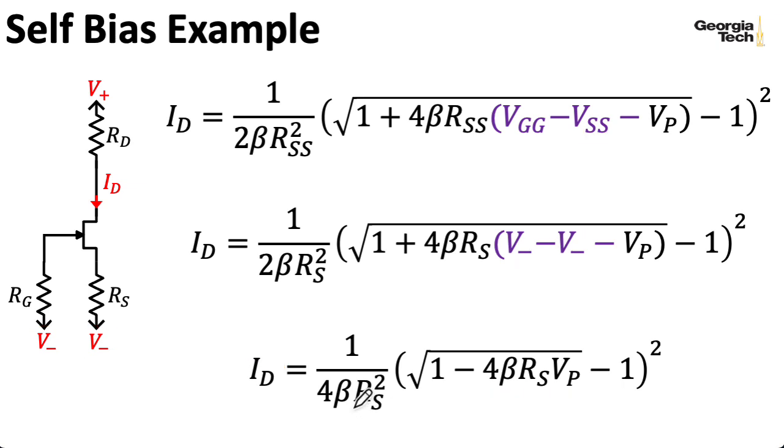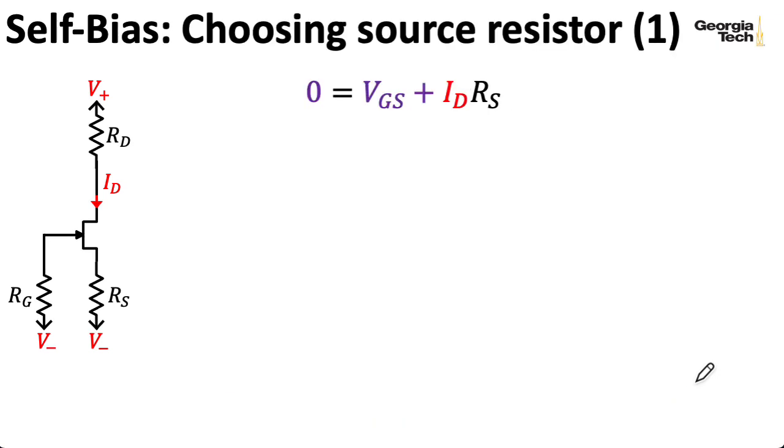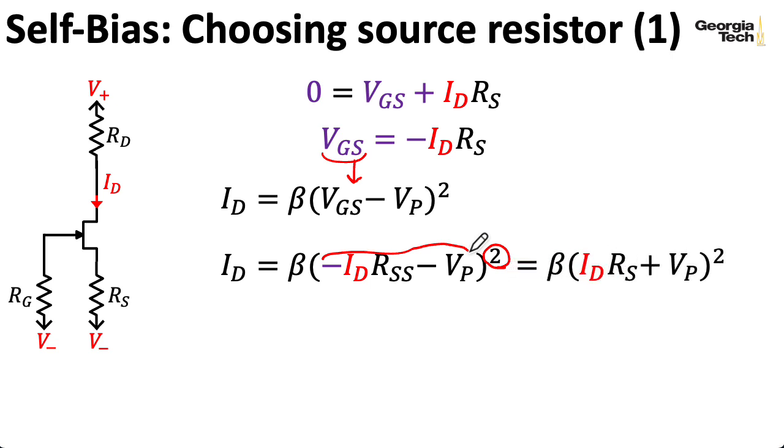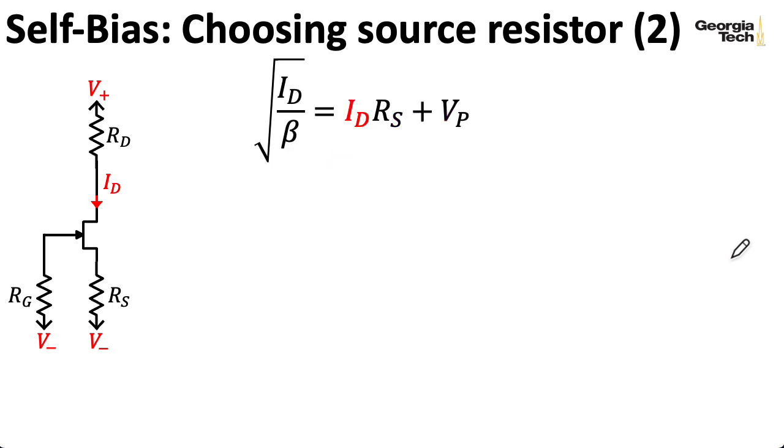Now we can go the other direction and try to find the appropriate RS that will give us a specific ID. You can do that by manipulating this equation, but it's actually easier to go back to some of the earlier equations. So manipulating this expression, we can write something like this. And then I can take the expression we had for the drain current in terms of the square law. Remember, I'm approximating the channel length modulation parameter lambda as 0. And now I can take VGS and substitute it in here to write this expression. But notice I have a square here. So I can take everything inside the parentheses and negate it, which gives me this expression. Now, let me divide both sides by beta. And then I can take the square root of both sides, which gives me this. And let me take this and copy that on to the next slide. So I can move VP over, and then divide both sides by ID.